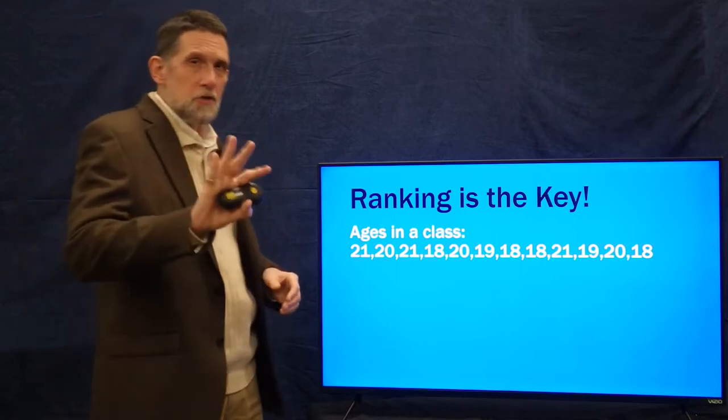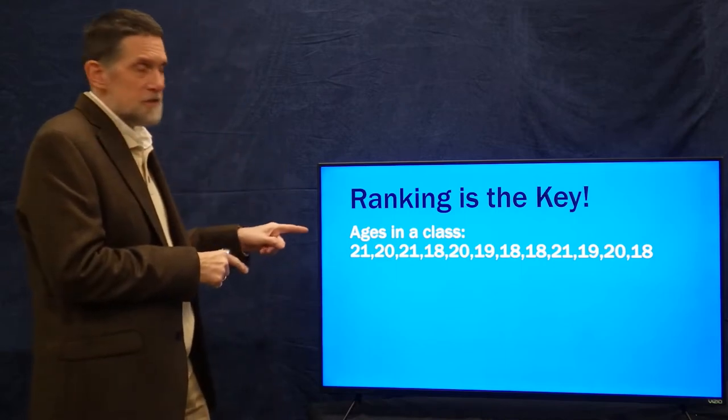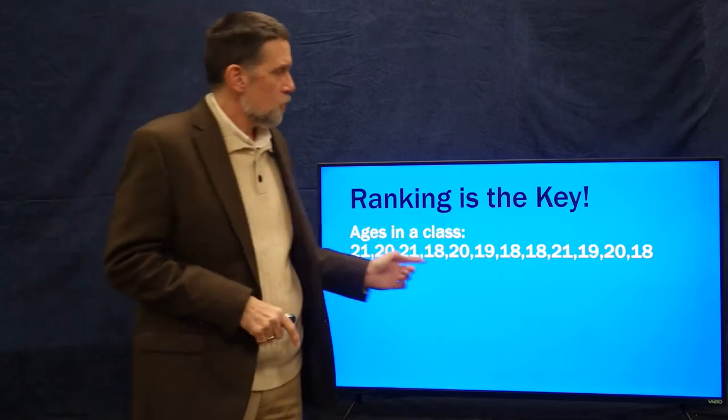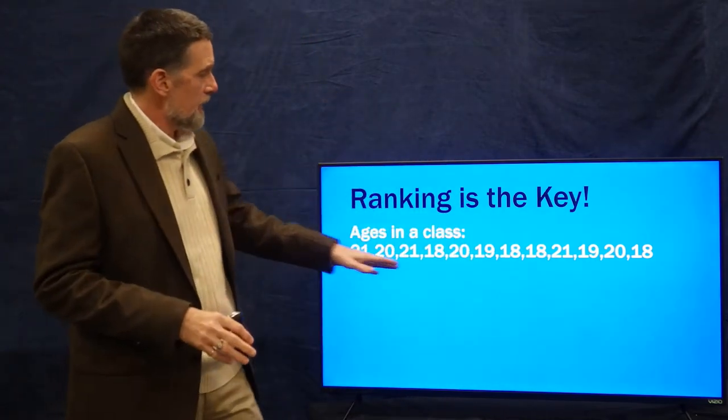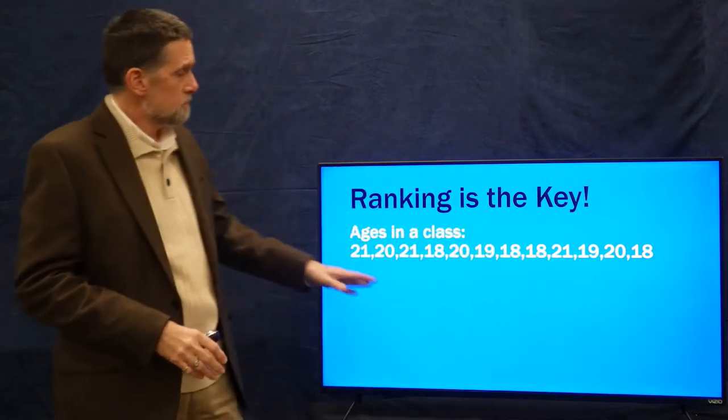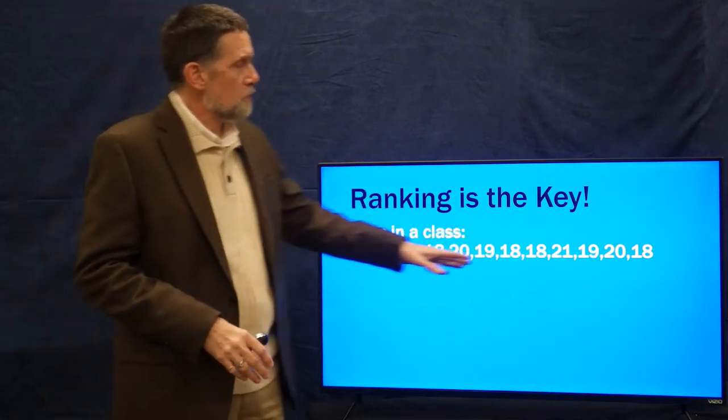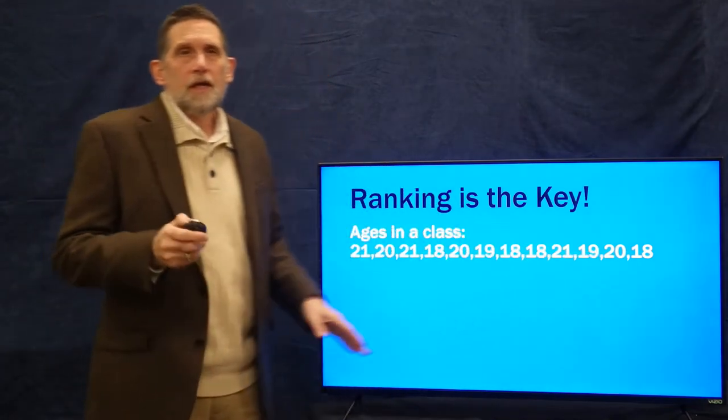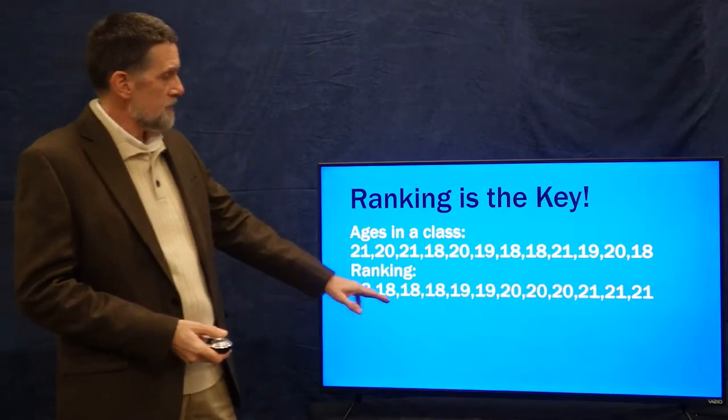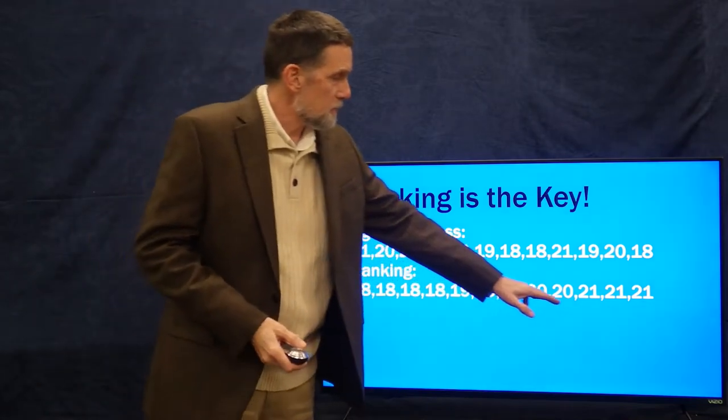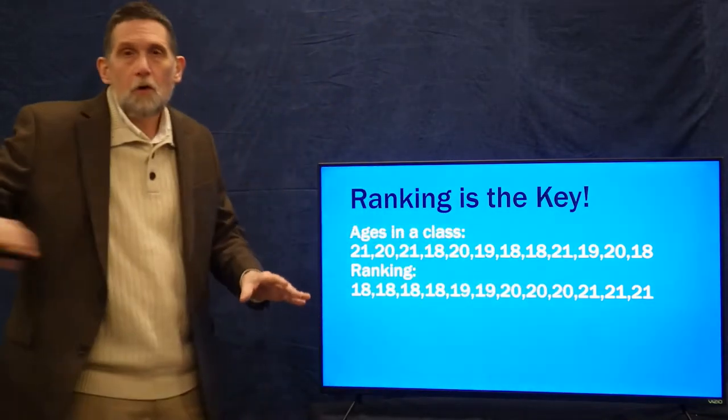We're going to talk about rank in two different ways. We're going to begin with this example. These are 12 people in an imaginary class and their ages, ranging from 18 to 21. In ordinal data we can order these, right? And so we do that: 18, 18, 18, 18, 19, 19, 20, 20, 20, 20. We put them in order.